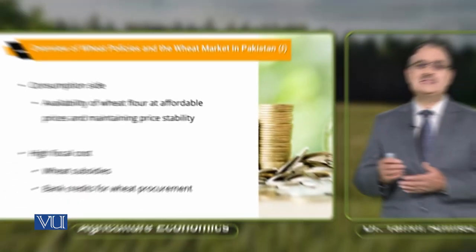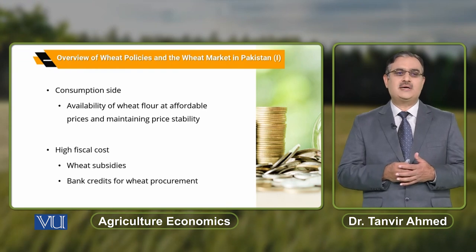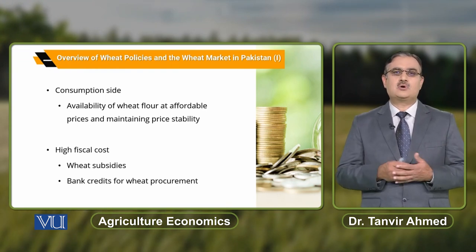By increasing wheat productivity and output, the government is trying to support farmers' income. At the same time, the objective of the supply side policy is to reduce dependence on food imports. On the consumption side, the major factor is the availability of wheat flour at affordable prices and maintaining price stability, but this involves a high fiscal cost.